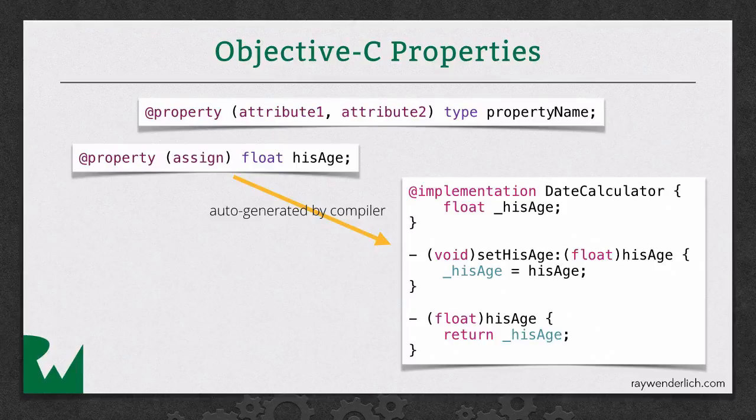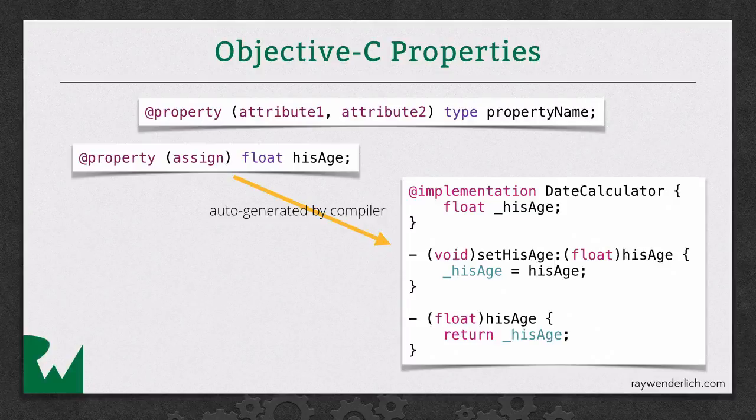And then what it will do for you is it will automatically create a getter and a setter. So whatever your property name is, we'll put set beforehand and capitalize it, and that's your setter. And it will set the instance variable equal to the value that's passed in. And similarly, it will create a getter. So it will be the name of your property, but as a method, and it will return to you that private instance variable. So you can have public properties or private properties, and it depends on whether you put them in your header file, in which case that's going to be a public property, or whether you put it in the private category inside your .m file, that would be a private instance variable.